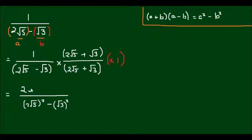And on the top I'll end up with 2 times √5 plus √3. Now all there is to do is to evaluate the terms on the bottom, so 2√5 plus √3 remain on the top.